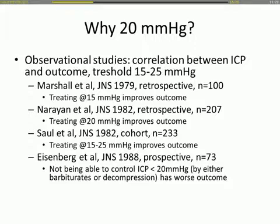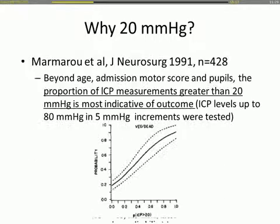These studies have been ongoing since the 1970s, 80s, and 90s. Giuseppe also cited the paper by Tony Marmarou, 'Beyond Age, Admission Motor Score, and Pupils,' which are still components of the IMPACT and CRASH models. The proportion of ICP measurements greater than 20 mmHg is most indicative of outcome. Above 20 is definitely bad.